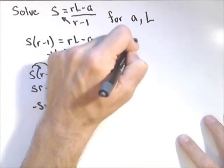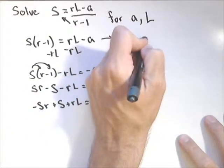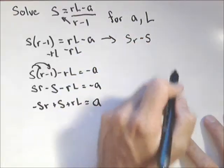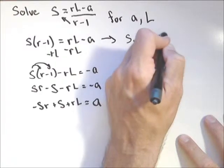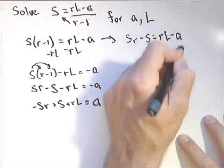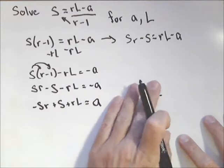So I'm gonna have SR minus S equals r L minus A. I'm trying to solve for L this time.